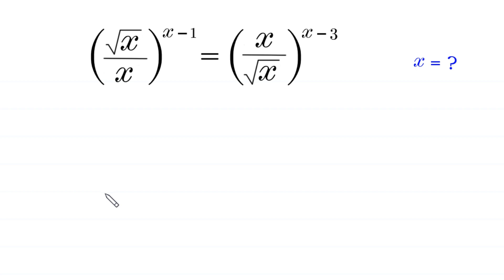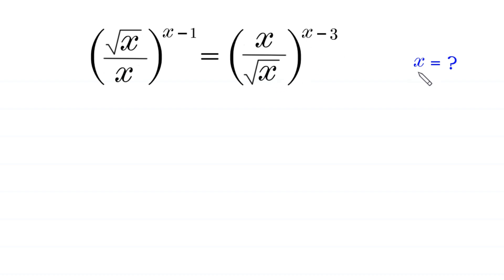Hello, welcome to how to solve this very nice exponential equation. Square root of x over x, whole to the power x minus 1, is equal to x over square root of x, whole to the power x minus 3. We need to find all possible values of x. So let's start.